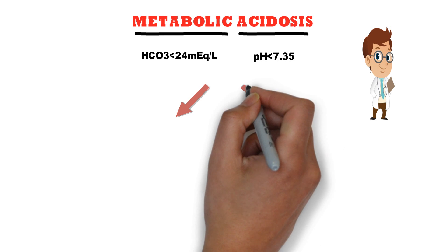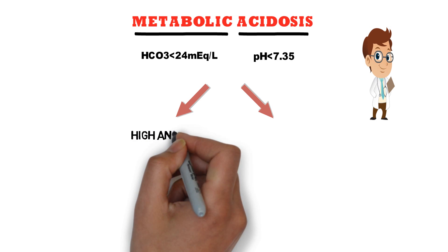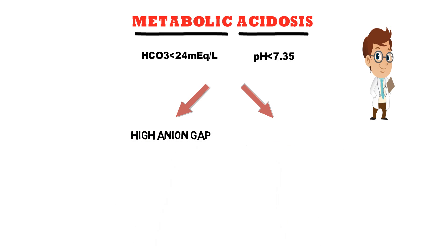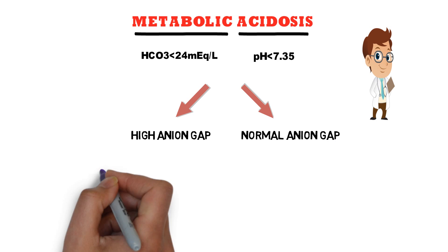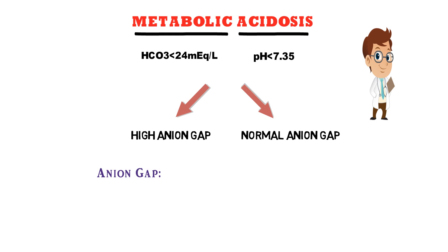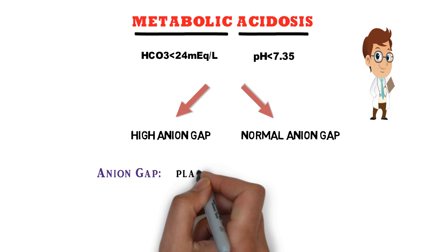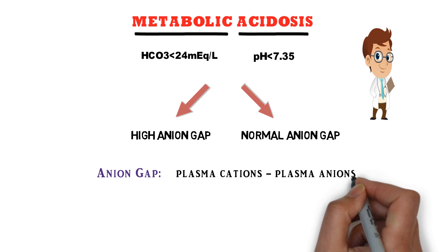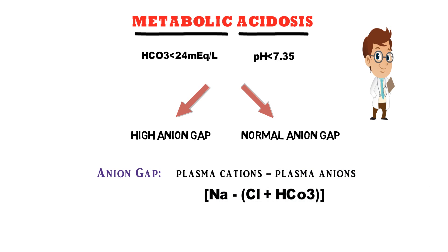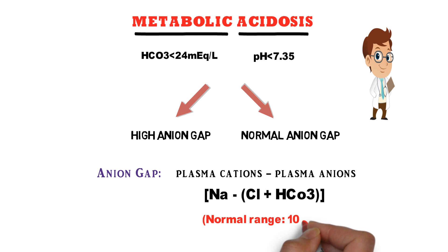Metabolic Acidosis can be categorized into two types: High Anion Gap Acidosis and Normal Anion Gap Acidosis. The Anion Gap is the difference between measured plasma cations and measured plasma anions — i.e., sodium minus chloride and bicarbonate. The normal range of anion gap is 10 to 16, which is 12 plus or minus 4.